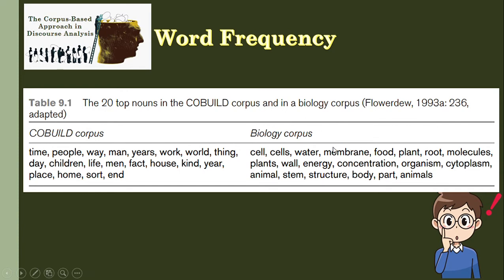On the other hand, a biology corpus was likewise analyzed using word frequency. According to research, the top 20 nouns in biology are: cell and cells, water, membrane, food, plant, root, molecules, plants, wall, energy, concentration, organism, cytoplasm, animal, stem, structure, body, parts, and animals.